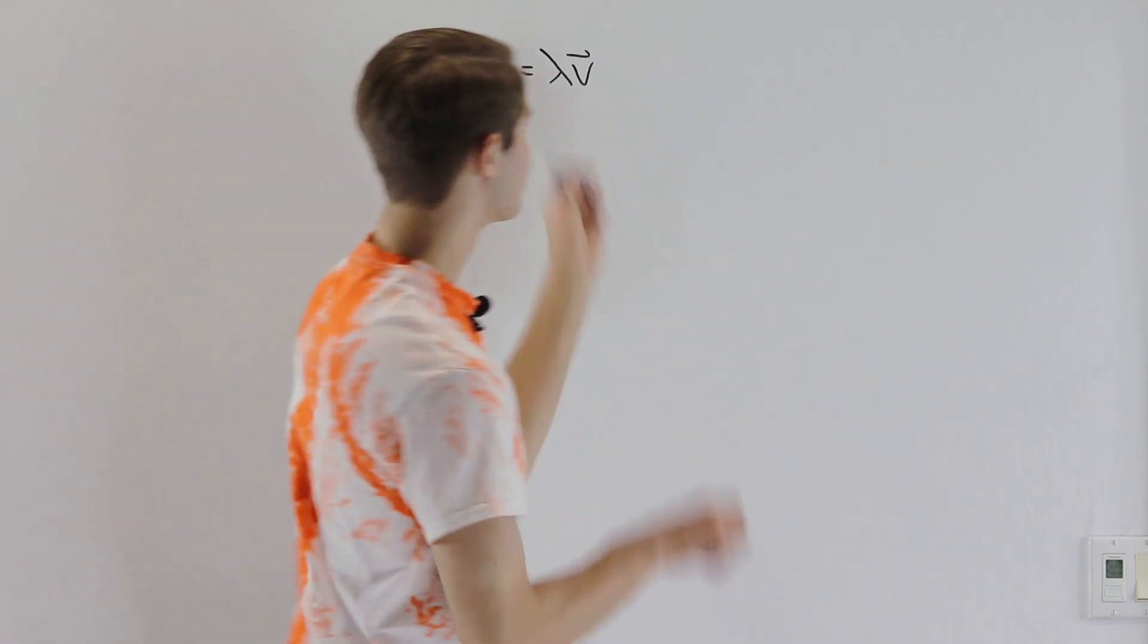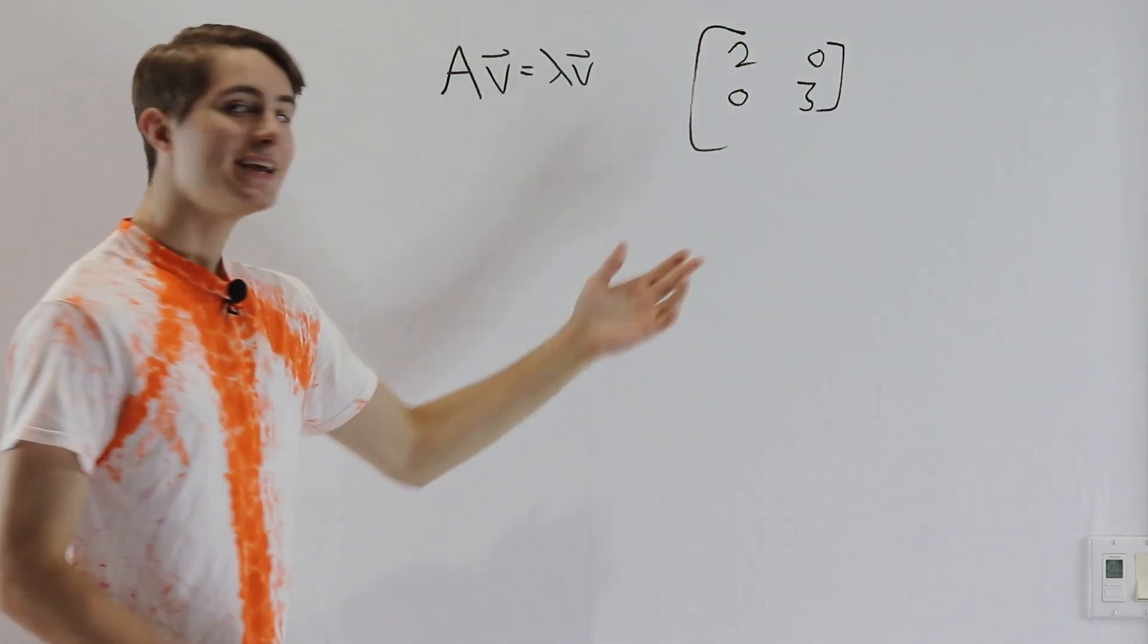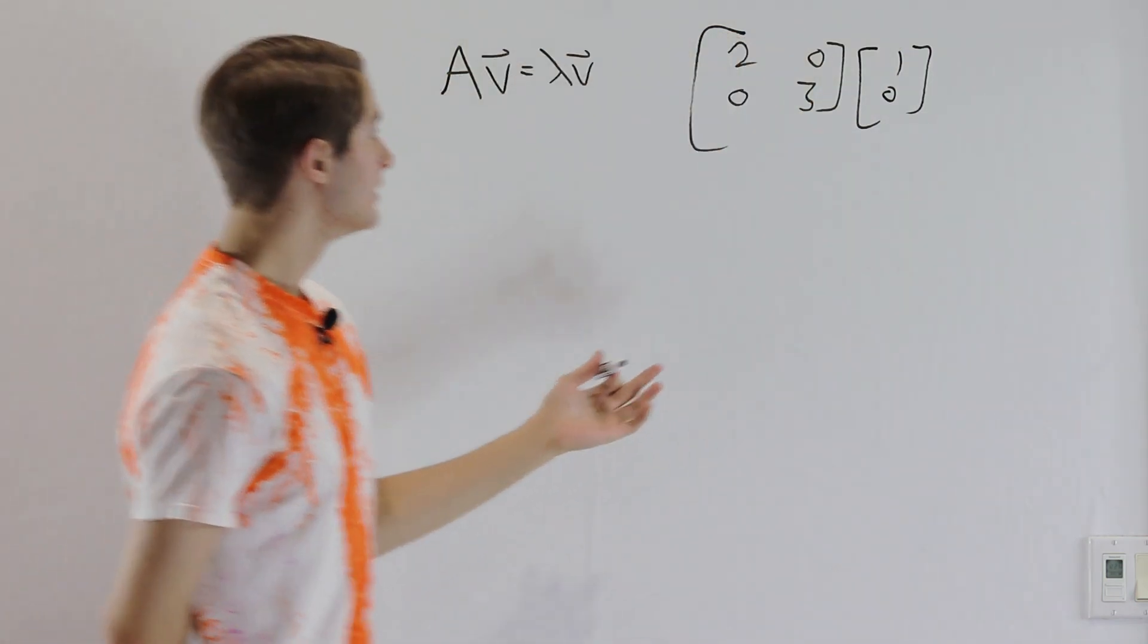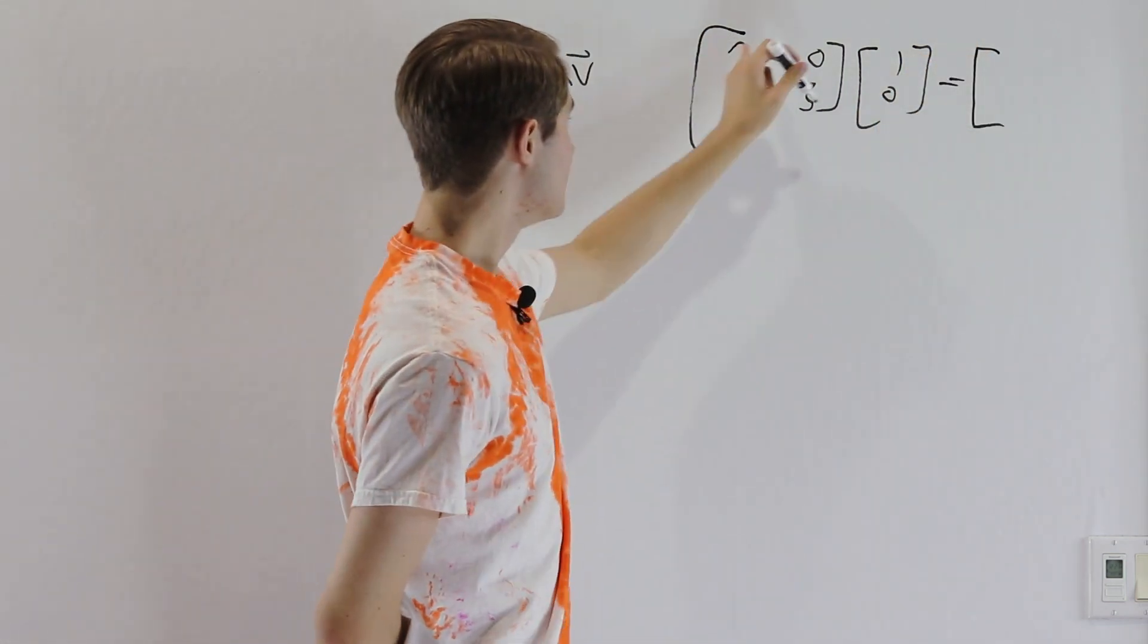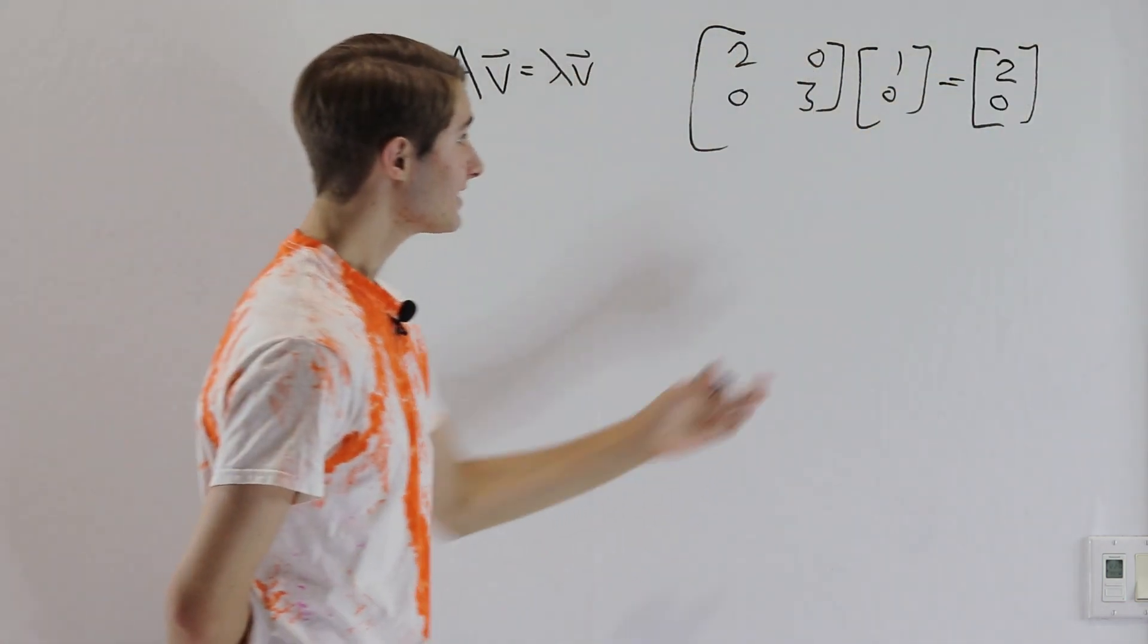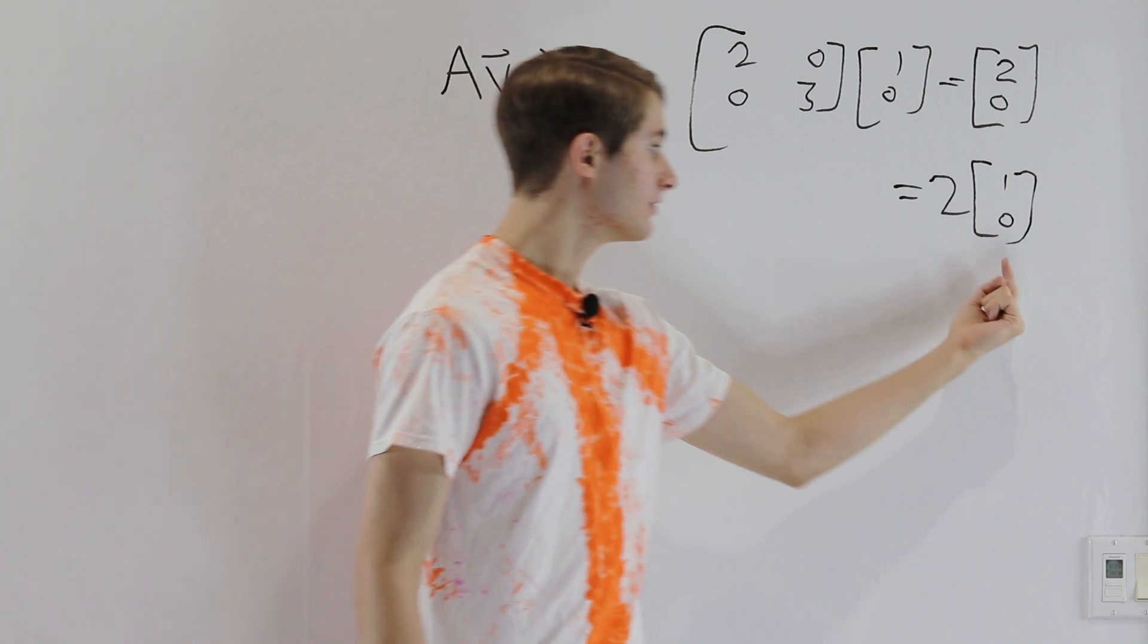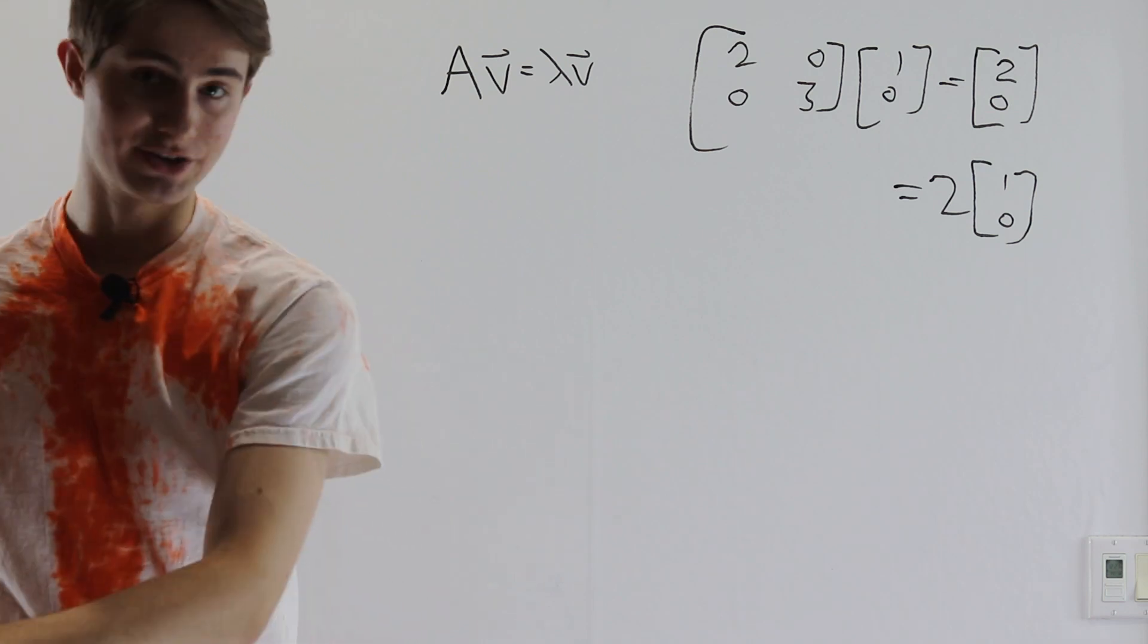So let's look at a simpler example here. If we have the matrix [[2,0],[0,1]], what would be the eigenvectors of this matrix? Well, one eigenvector would be the vector [1,0]. The reason I know that is because if you multiply [1,0] by this matrix, the result that you'll get is just 2 times 1 on the top, so you have [2,0]. And [2,0] is the same as 2 times [1,0]. So we apply the matrix to [1,0] and we get the result that the vector is scaled by some constant value. That's what an eigenvector is.